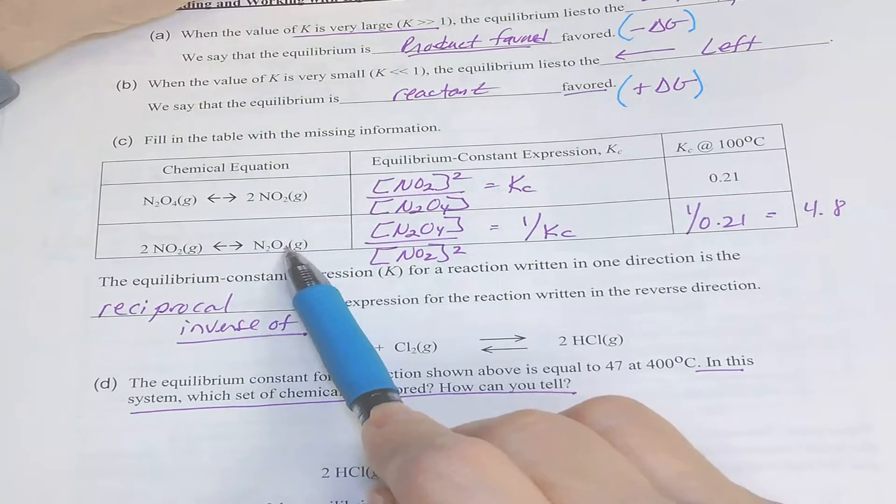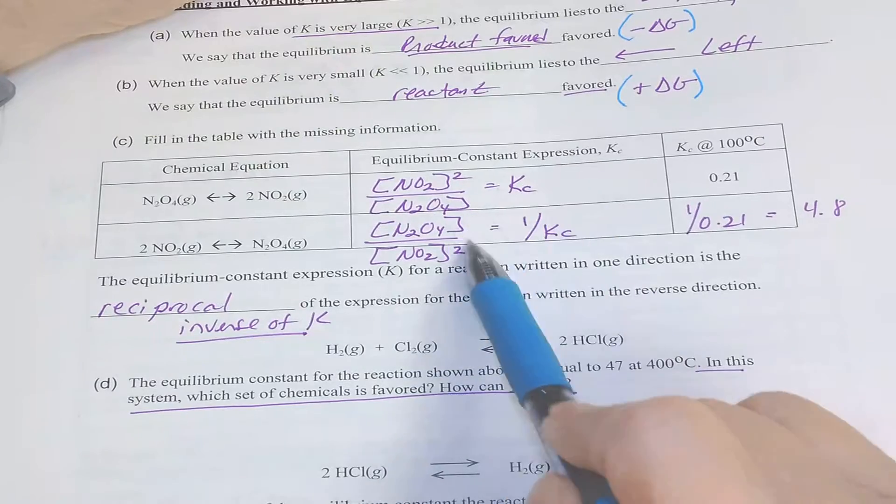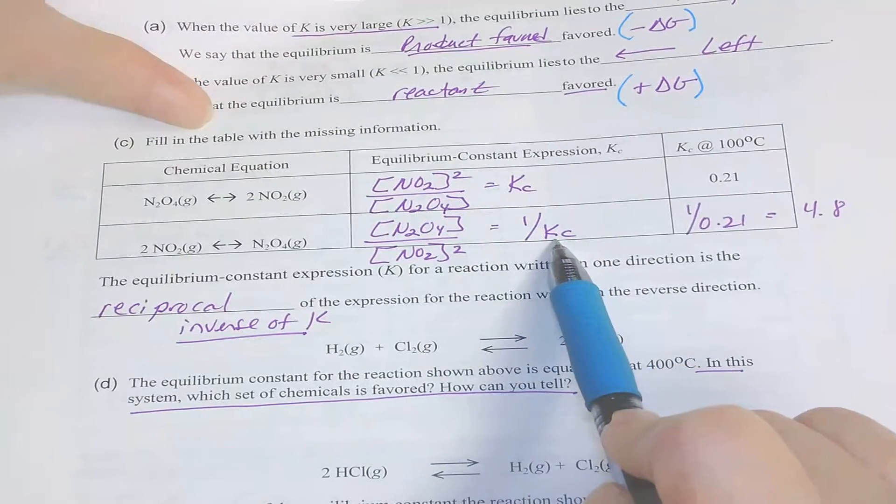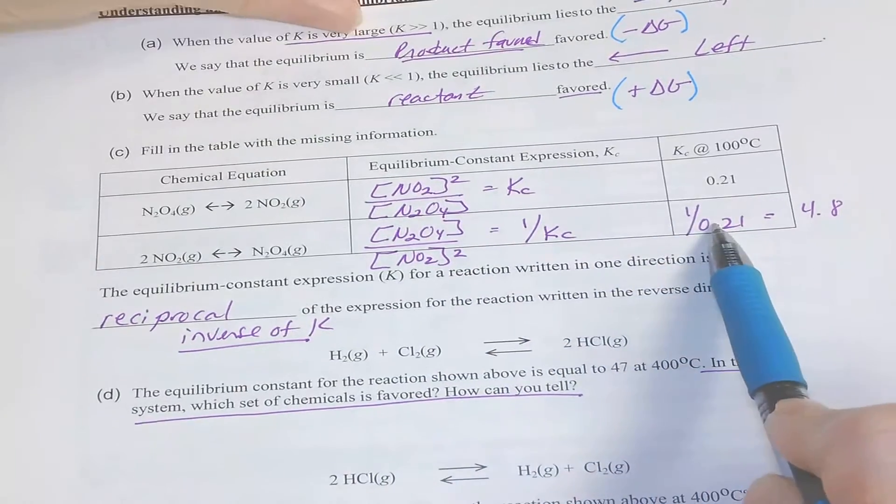So actually we haven't doubled it, I'm sorry, we just flipped it here. So here, the flipping of that is just the inverse of that K value.